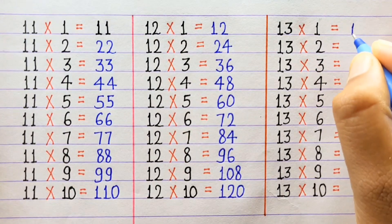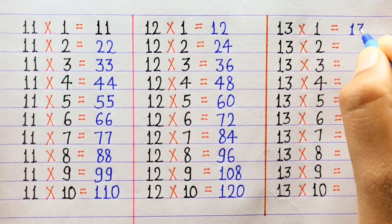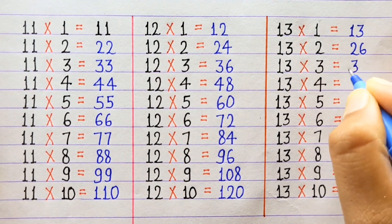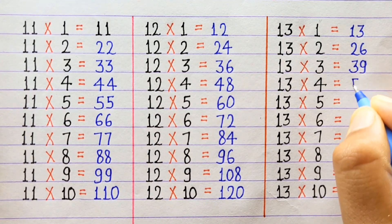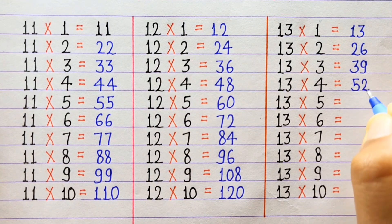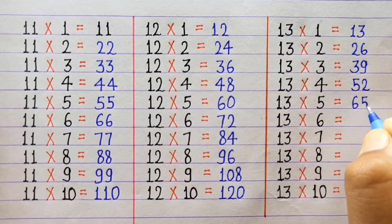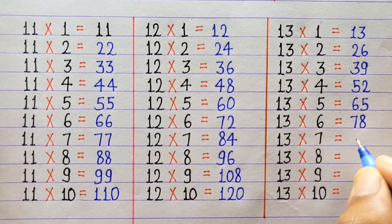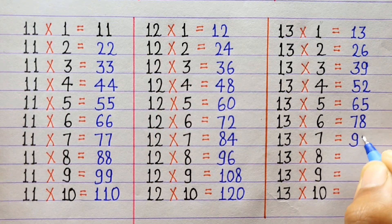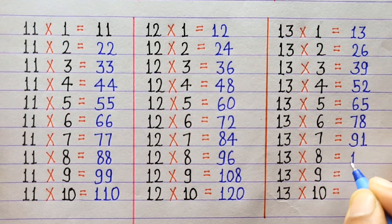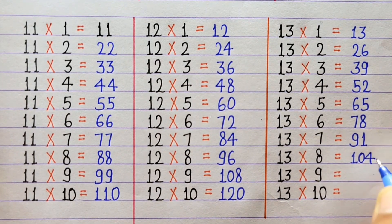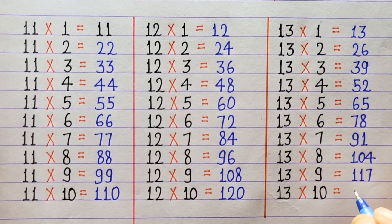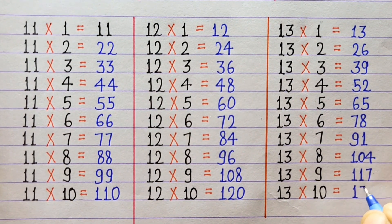13×1=13, 13×2=26, 13×3=39, 13×4=52, 13×5=65, 13×6=78, 13×7=91, 13×8=104, 13×9=117, 13×10=130.